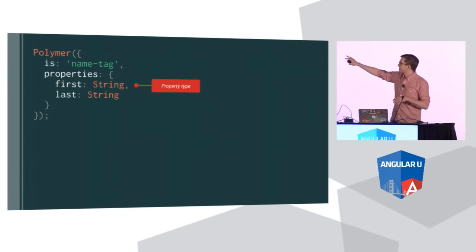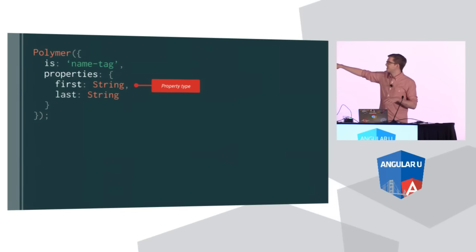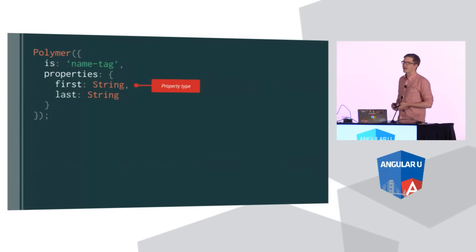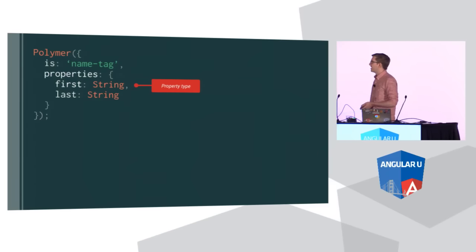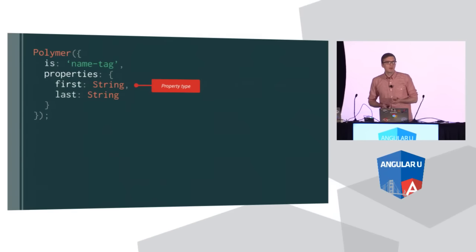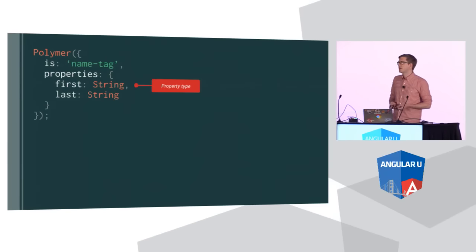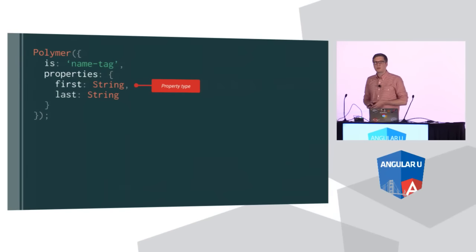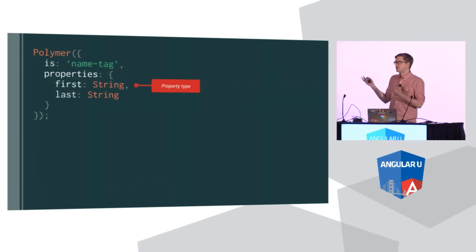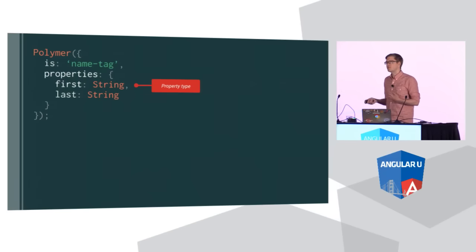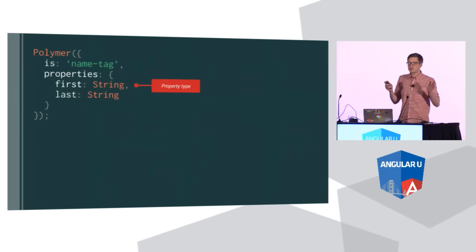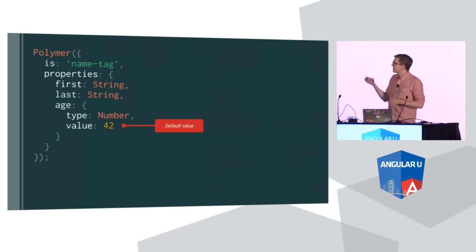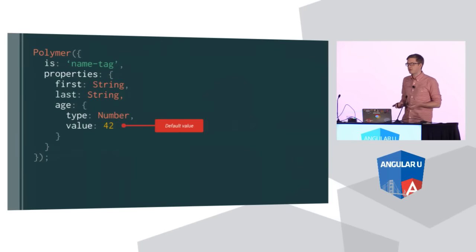I've got this little name tag thing with two properties, first and last, as if someone's passing in a first and last name. I've typed both of these to string. As someone passes in values via attributes to this component, they will be deserialized to those types. You can use all sorts of different types — string, object, array, number. Here's an example of using a number for an age property and also giving it a default value.